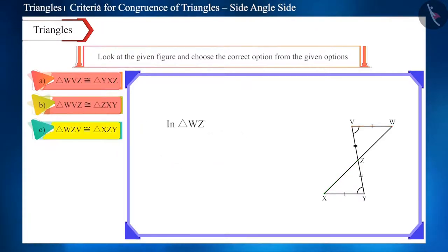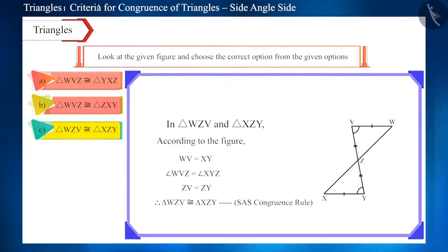Now, let's look at the last remaining option. According to the figure, side WV is equal to side XY. Angle WVZ is equal to angle XYZ and side ZV is equal to side ZY. So, according to the SAS congruence criterion, these triangles are congruent. So, the third option is the correct option.